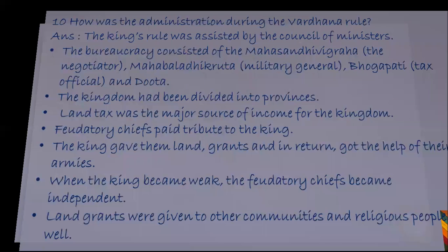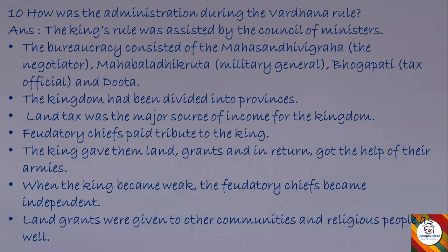Question: how was the administration during the Vardhana rule? Answer: The king's rule was assisted by a council of ministers. The bureaucracy consisted of the Mahasandhivigrahaka (the negotiator), the Mahabaladikrita (the military general), the Bhagapati (tax official), and the Dhuta. The kingdom was divided into provinces, and land tax was the major source of income. Feudatory chiefs paid tribute to the king, and the king gave them land grants in return for military support. When the king became weak, feudatory chiefs became independent. Land grants were also given to religious communities.